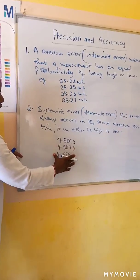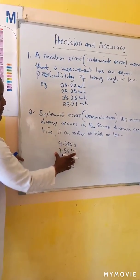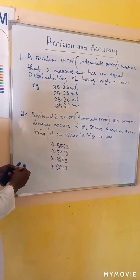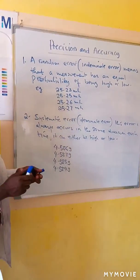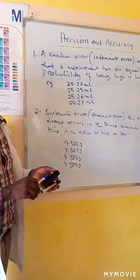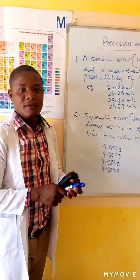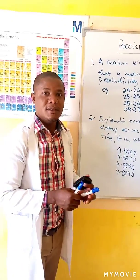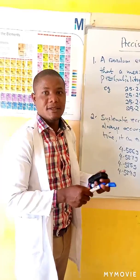In cases where there is no systematic error, that is when you can assume that good precision assumes good accuracy. In the next tutorial we will look at significant figures and calculations.